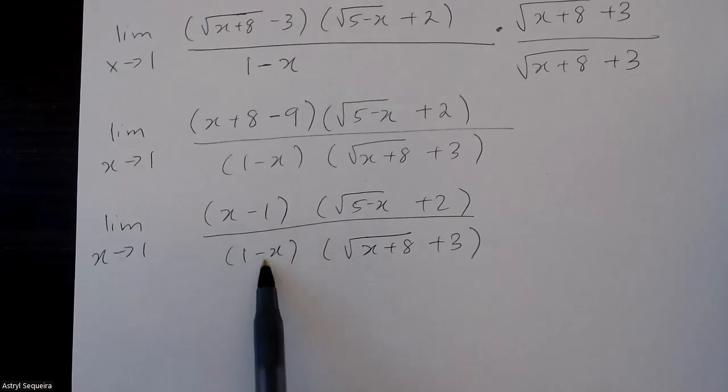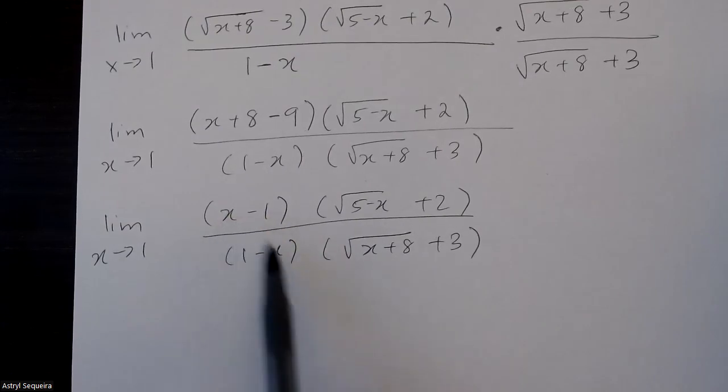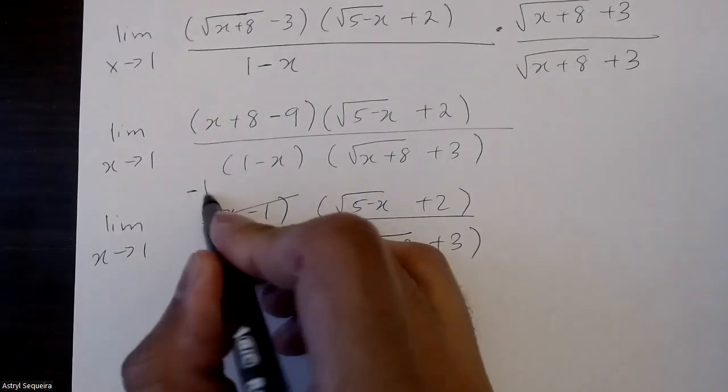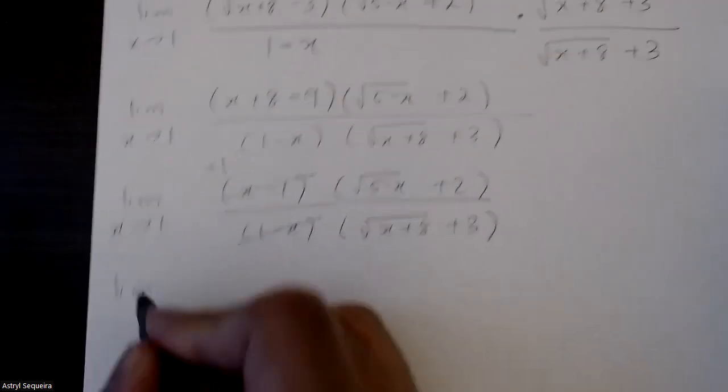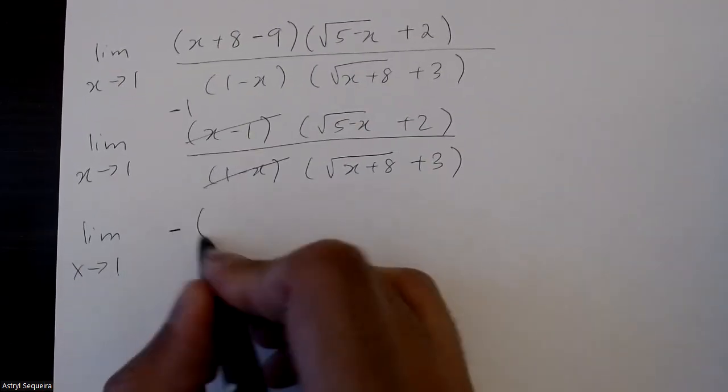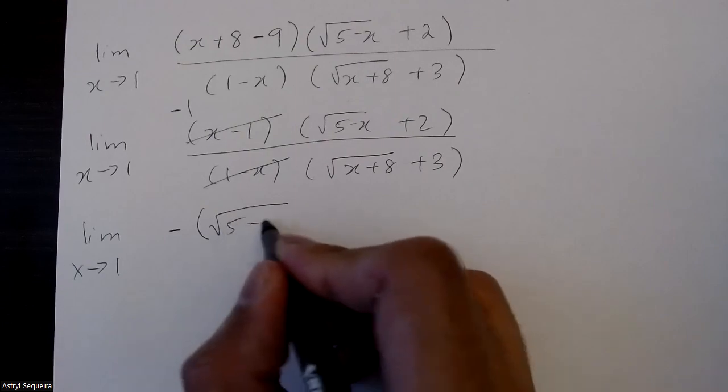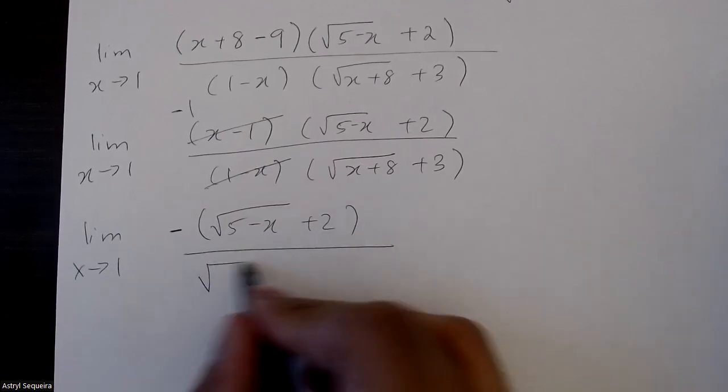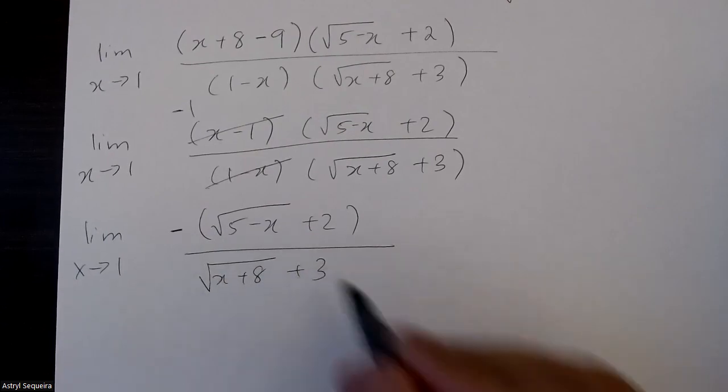Now I can cancel off these two brackets, but since they're the opposites of each other, when I cancel them off, I'm left with a negative 1. So I'm left with lim x approaches 1, negative root 5 minus x plus 2 over root x plus 8 plus 3.